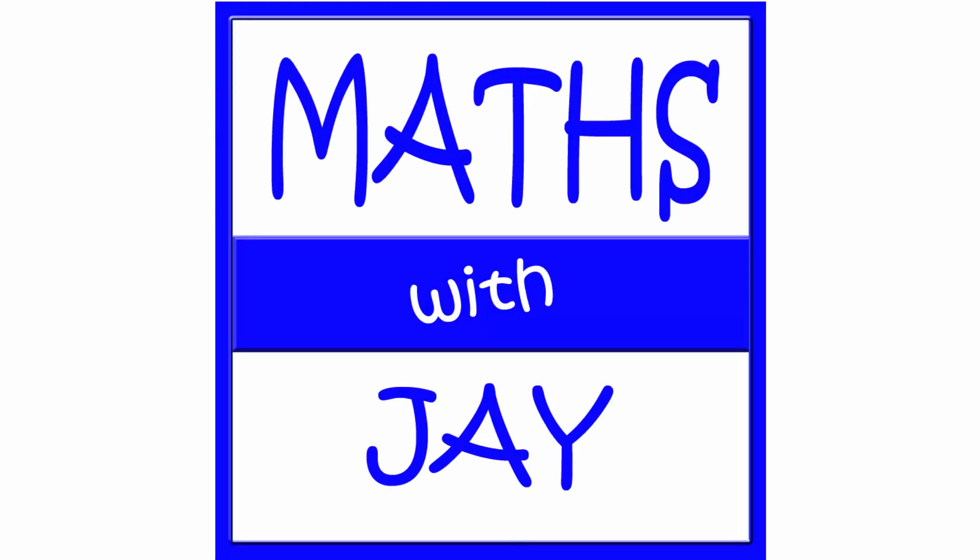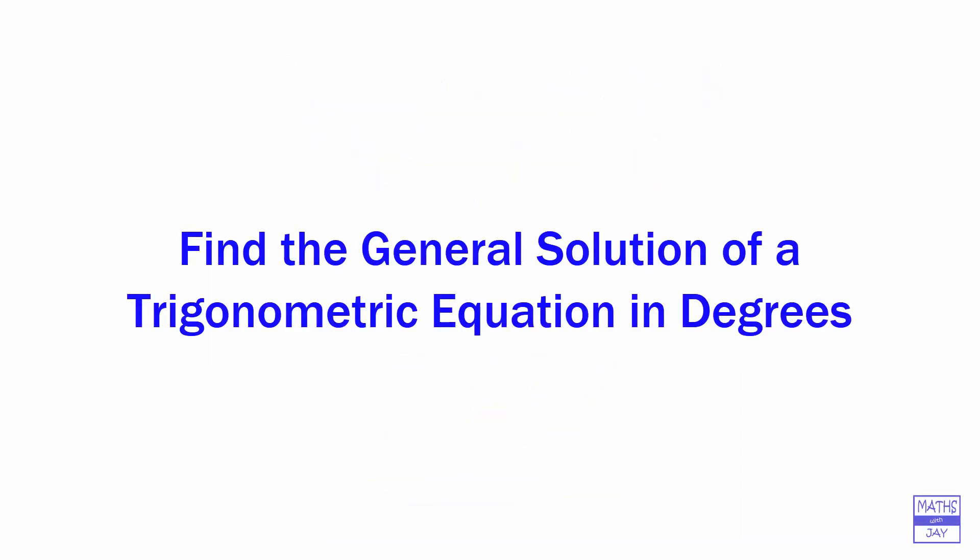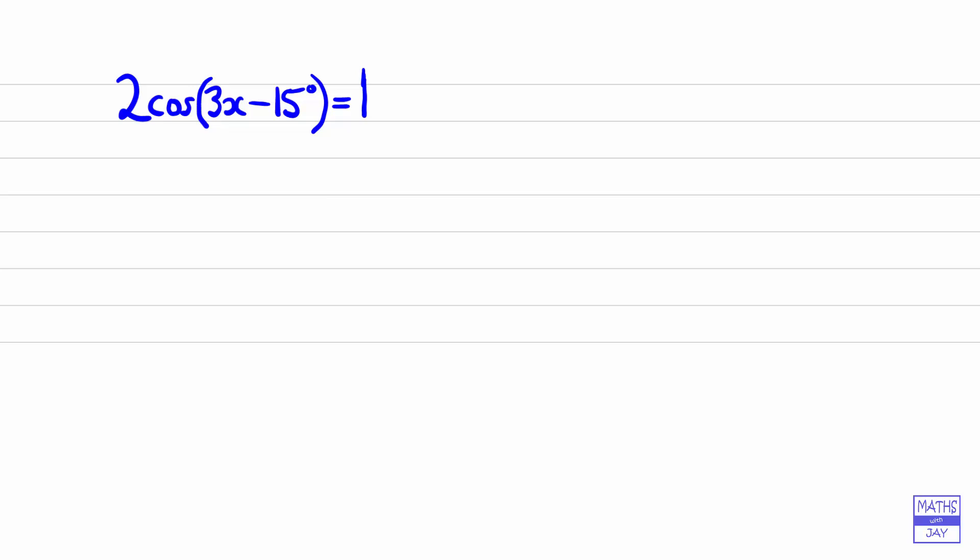Hello, welcome to Maths with Jay. We are looking to find the general solution of this equation, and we can see that it's going to be in degrees because of the 15 degrees that makes it clear. So let's start off by dividing both sides of the equation by 2.